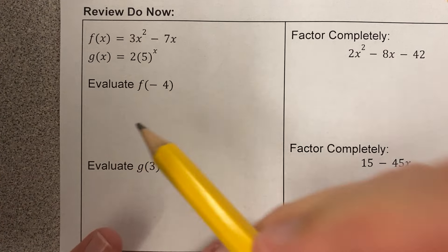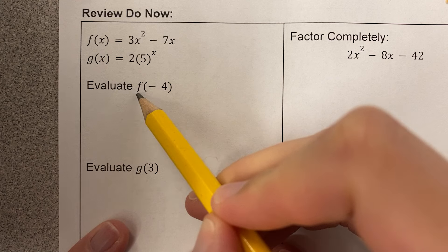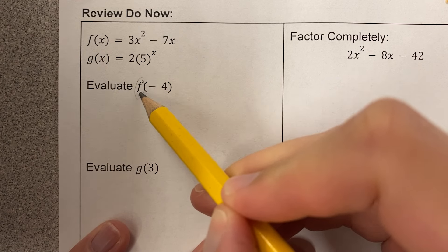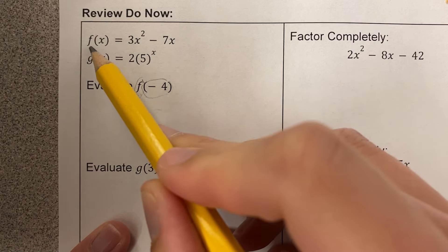When I'm evaluating functions, what that means is this is giving me two pieces of information. It's saying take the f equation and plug in negative 4. So here's the f equation, and I'm going to plug in negative 4 wherever I see x.